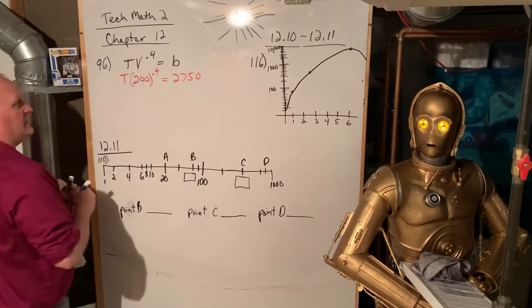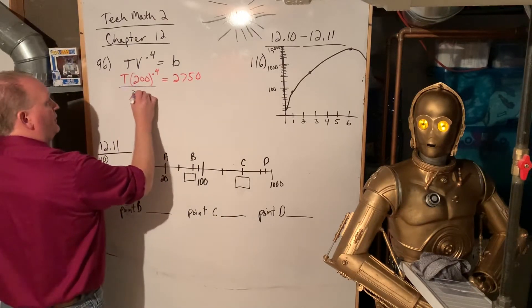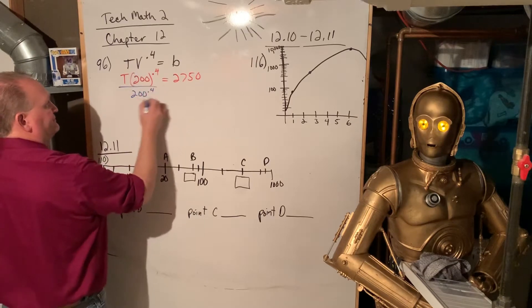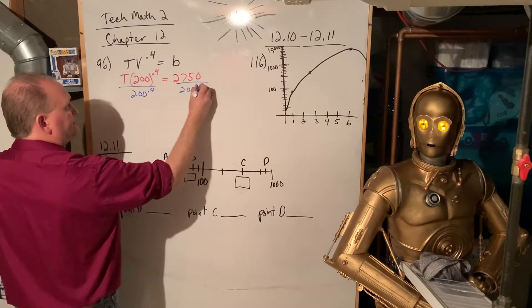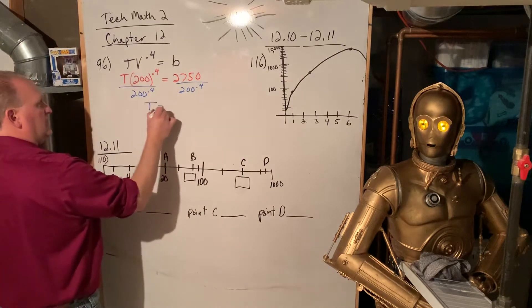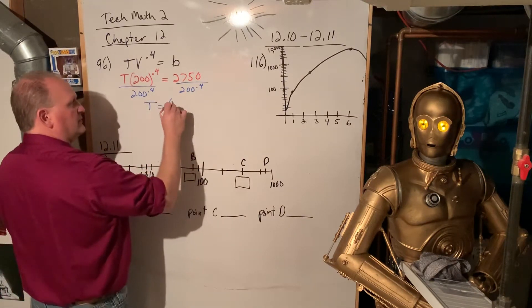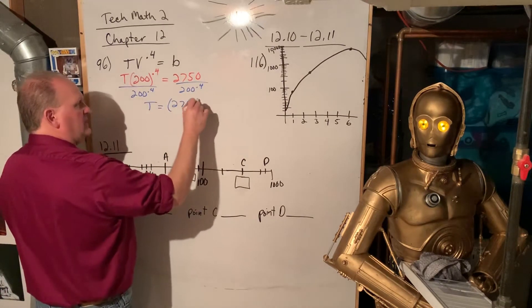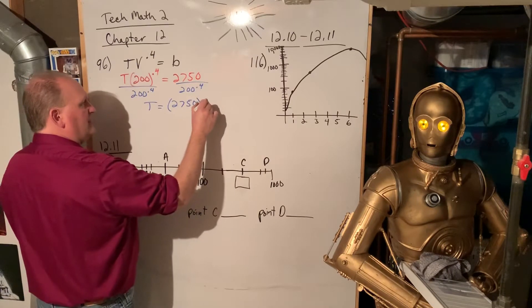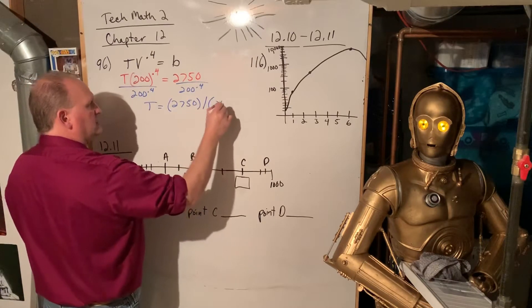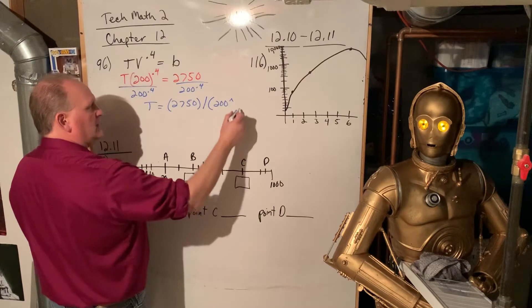So all you do is divide both sides by 200 to the 0.4. And so we can click that in in one swoop here. We can do a parenthesis 2750 and parenthesis divided by parenthesis 200 to the power 0.4.